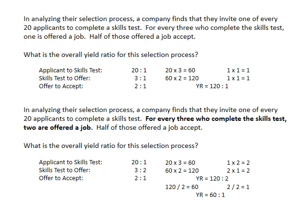One way to ensure you listed your numbers correctly prior to multiplying down each side is that the bigger number should always be on the left.